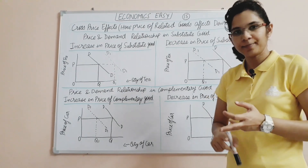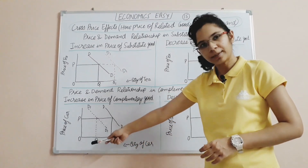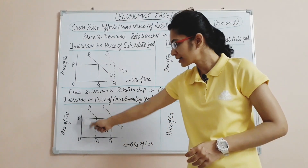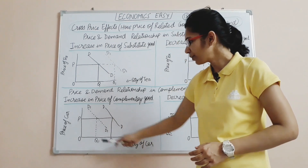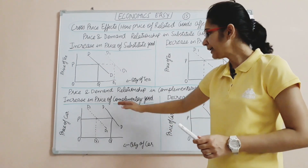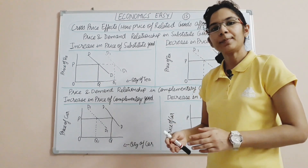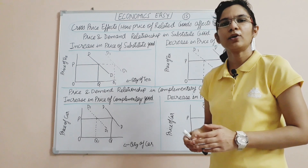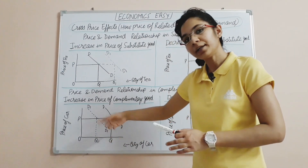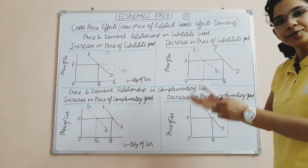Now let's look at complementary goods, taking car and petrol as an example. In the case of an increase in price of a complementary good — petrol's price has gone up — OP is the original price of car, OQ is the original quantity, and DD is the original demand curve. Since petrol has become expensive, people will reduce their demand for cars. The quantity demanded shifts to Q1 and the demand curve shifts to D1.